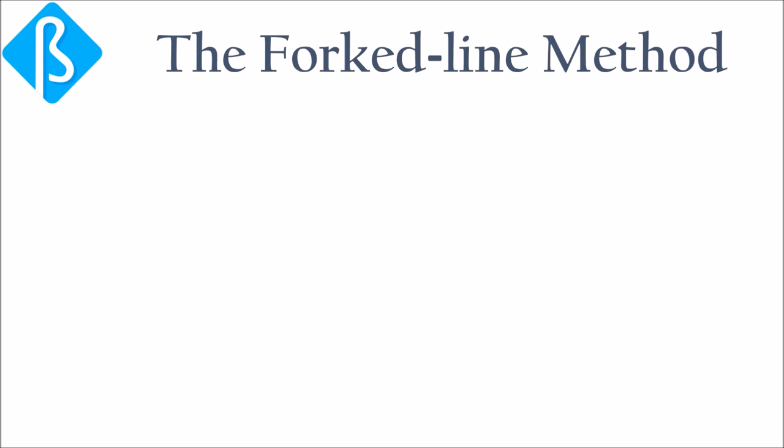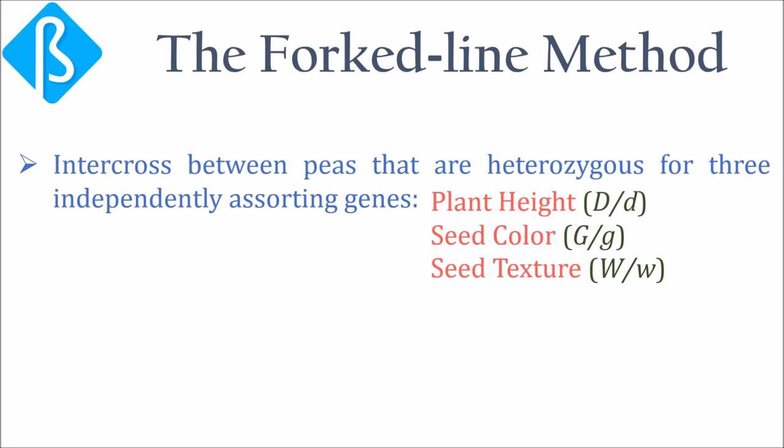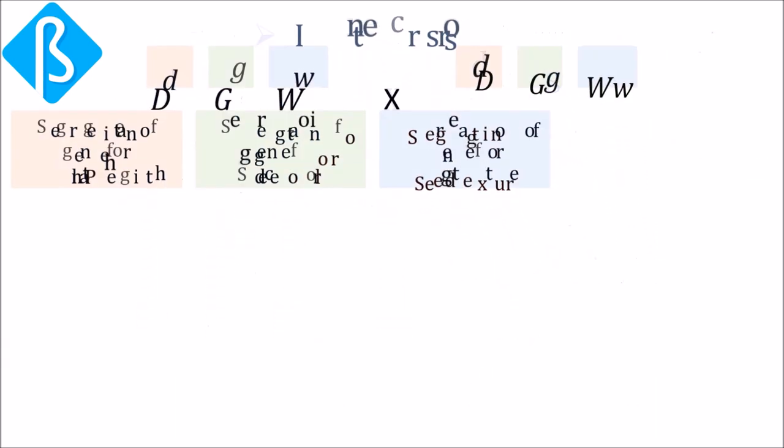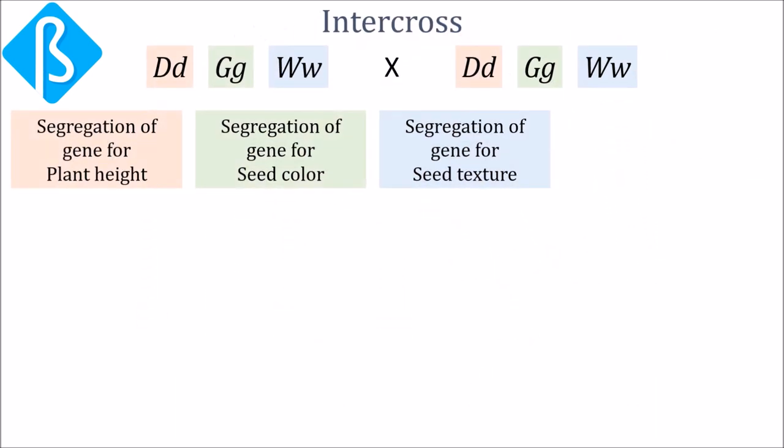To understand it better, let us consider an intercross between peas that are heterozygous for three independently assorting genes: one controlling plant height, one controlling seed color, and one controlling seed texture. So there is trihybrid cross and instead of computing the progeny in square by combining the gametes like in Punnett, we display them in a diagram of branching lines.